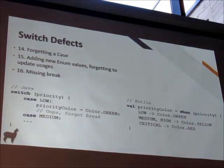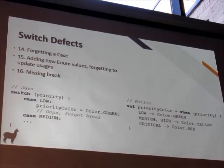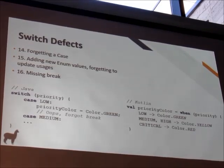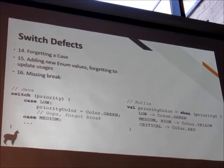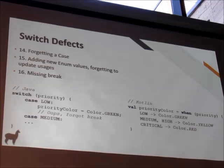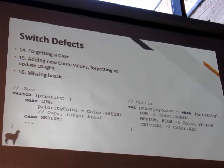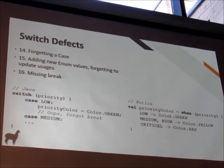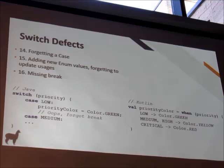Suppose you have an enum Priority — low, medium, high — and you switch based on priority. Someone else modifies the enum and adds a new priority like 'critical', and you might forget to handle that. Java doesn't complain. In Kotlin, when we use 'when' as an expression — for example, assigning a priority color — if we forget an enum value, it won't even compile, because it's not exhaustive. The compiler at compile time ensures you've handled all the cases.